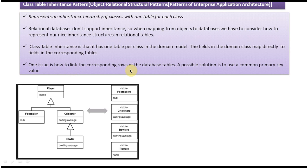One issue is how to link the corresponding rows across database tables. A possible solution is to use a common primary key value so that we can retrieve related information from the corresponding tables.